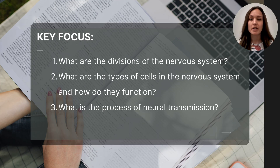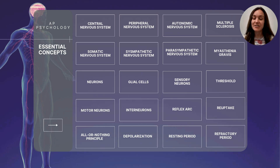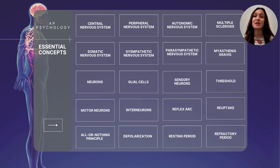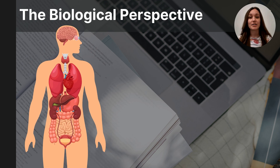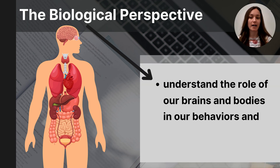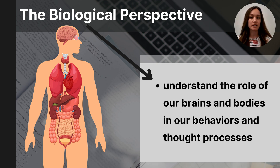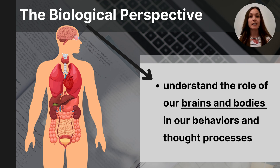After watching this video you should be able to answer the following key questions and define all of the essential concepts from part two. As you already know from Unit 0, psychologists have different areas of focus that inform their perspective on the science of psychology, and one of those is the biological perspective. We will take a biological approach for the rest of this unit, working to understand the role of our brains and our bodies in our behaviors and our thought processes.